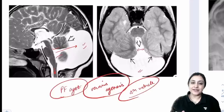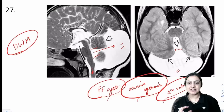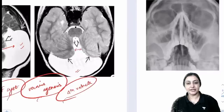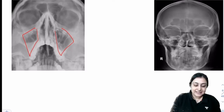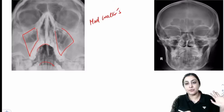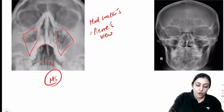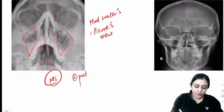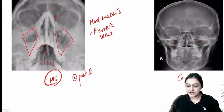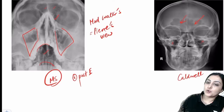Dandy-Walker variant is when not all three criteria of the triad are met. For paranasal sinus X-rays: when the maxillary sinus is very well seen, this is the modified Waters view (open mouth) — also called Pierce view. It is the best view for maxillary sinus and can show frontal, anterior ethmoidal, and sphenoidal sinuses, but not posterior ethmoidal. When maxillary sinuses are overlapped, this is Caldwell's view — best for frontal sinus.